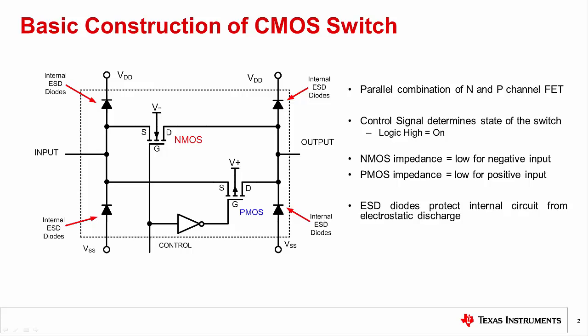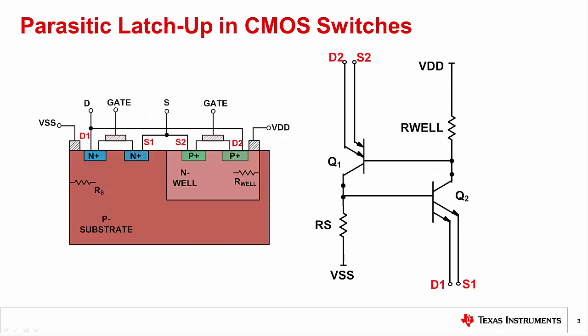ESD and electrical overstress for amplifiers is covered in TIPL 1401 to 1414, and many of the concepts covered in this series are general and apply to all semiconductor devices. It is recommended that you review this material to get a deeper understanding of ESD and electrical overstress, or EOS. This video will focus on overstress problems that are specific to multiplexers. One common electrical overstress issue, known as latch-up, can occur when an input signal is higher than the supply rail VDD or lower than the supply rail VSS.